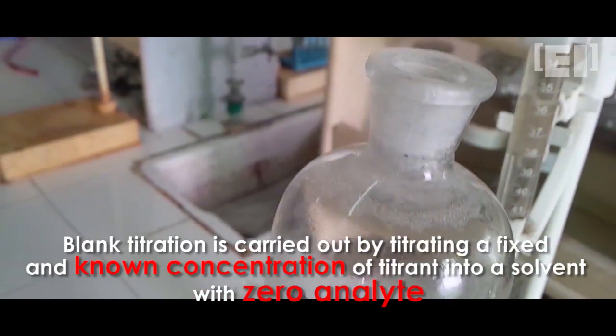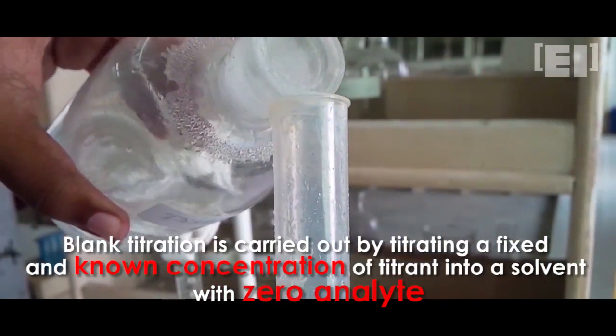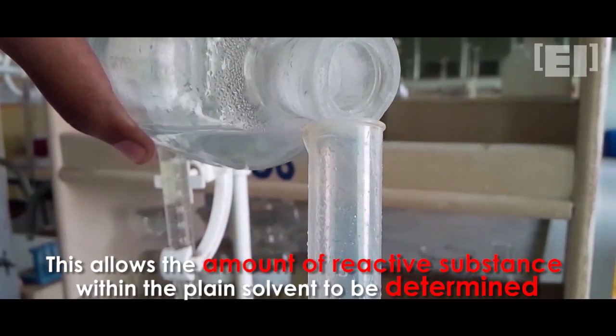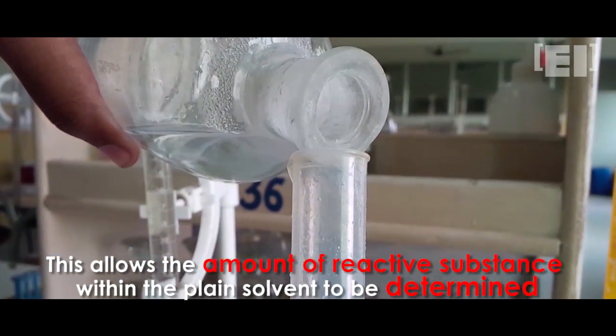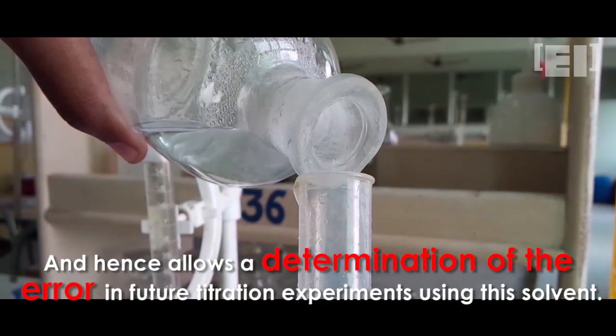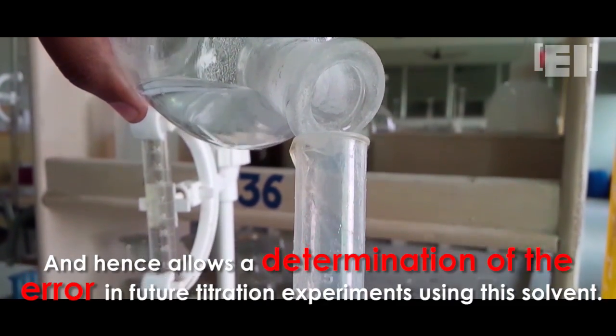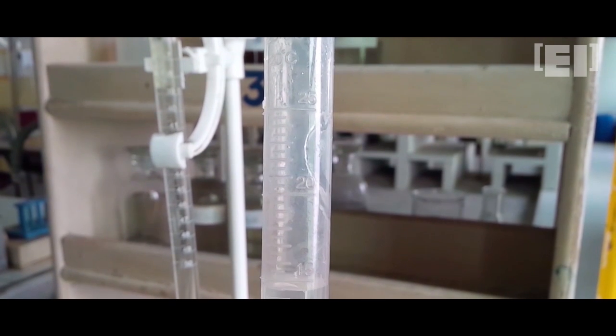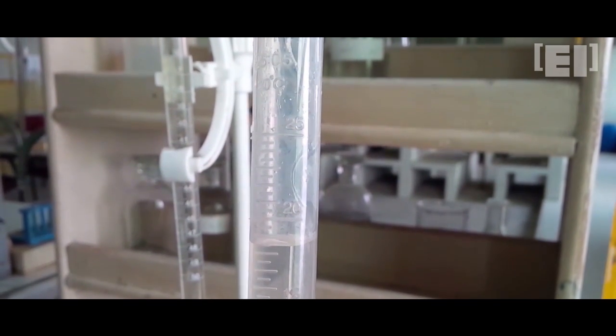A blank titration is that process in which the analyte is not present in the solution to be tested. It is done to check for possible sources of errors. For example, the water sample contains many impurities which can eat up the AgNO3 molecules. This may give you an inaccurate reading. So as to avoid this, we subtract the reading of blank titration from the general titration's reading. This minifies the chances of inaccurate readings.